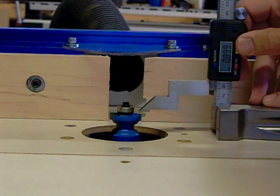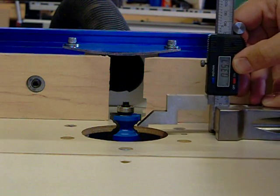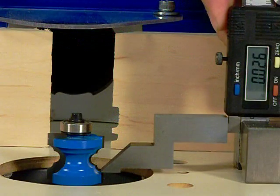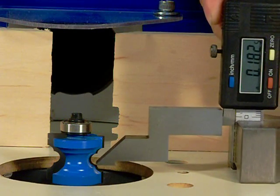With your router table unplugged, the Digital Height Gauge can check the overall bit height, but the measuring arm has a pointer milled in at zero that allows you to set the bit height to any part of the profile desired.